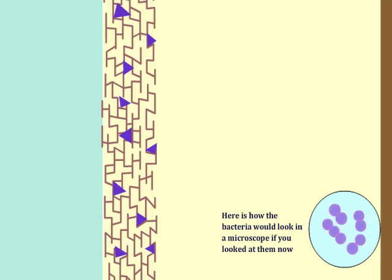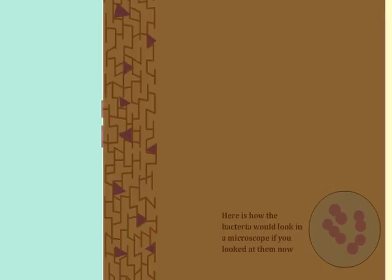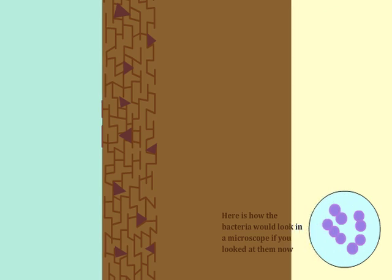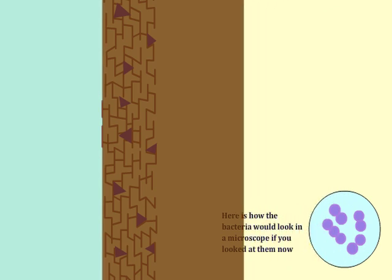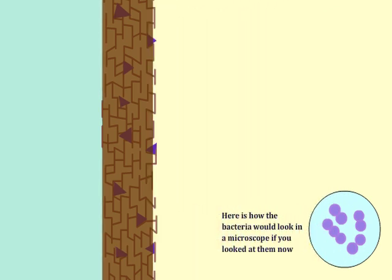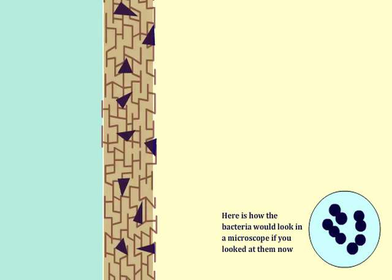Next, the slide is flooded with iodine solution for one minute and then washed again. During this step, the iodine and crystal violet combine to form a larger complex within the layers of the cell wall. Microscopically, the bacteria would appear dark blue or black after this step.